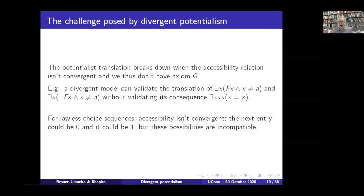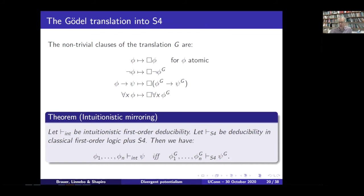As we've already mentioned, the potentialist translation is not available when the accessibility relation isn't convergent and we don't have axiom G. For those who like to play around with these things, here's a little example of an inference that breaks down in cases of divergent branching — but I'm not going to go through that now. And as Ethan remarked, for lawless choice sequences you have that kind of divergence. So the whole existing apparatus of potentialist analysis is not available in the case of choice sequences. Now, what to do instead?